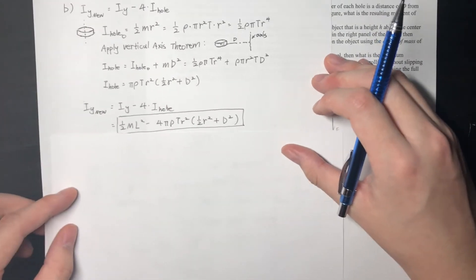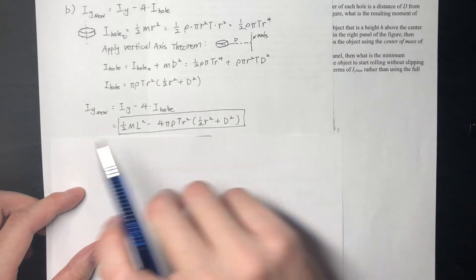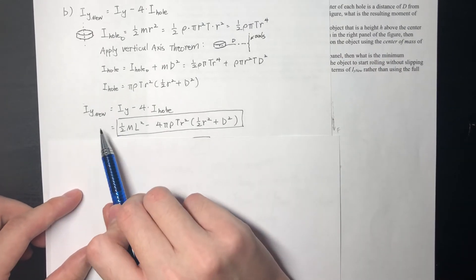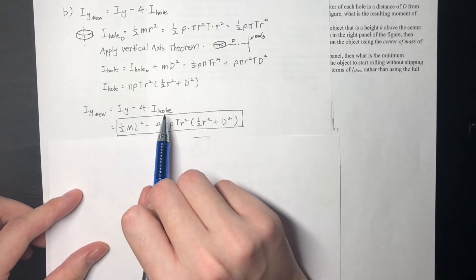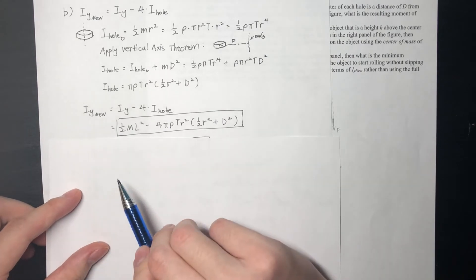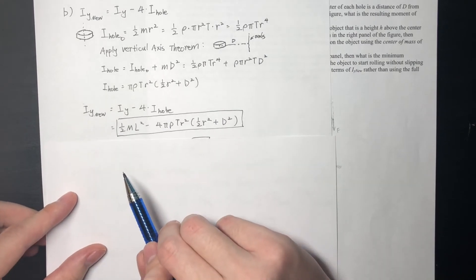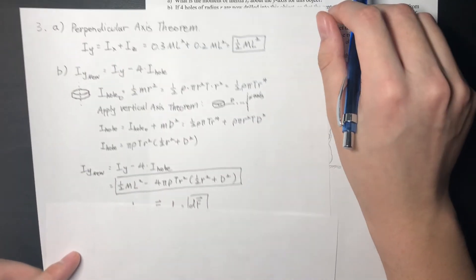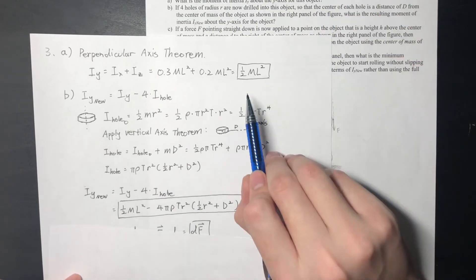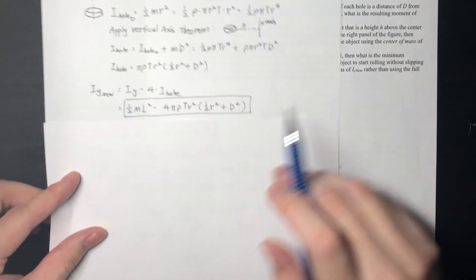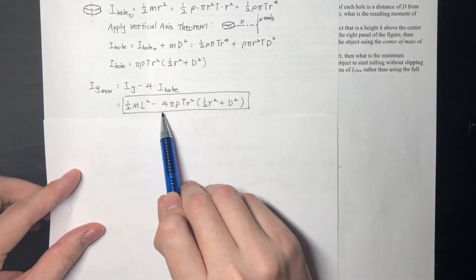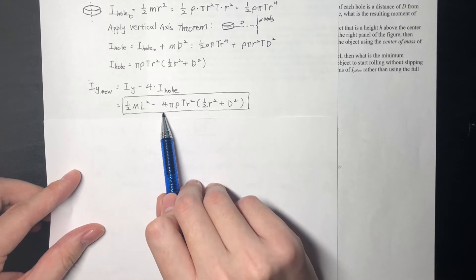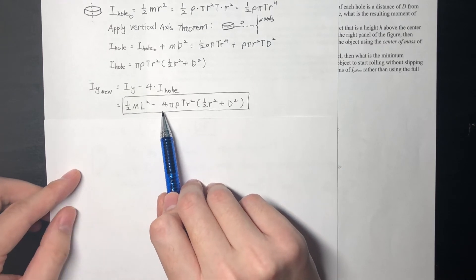Going back to our original approach: I_Y_new equals the original I_Y minus the contribution of the four holes. So we take the original moment of inertia from Part A, 0.5 mL squared, and subtract what we just calculated, multiplied by 4, since there are four holes that were drilled.